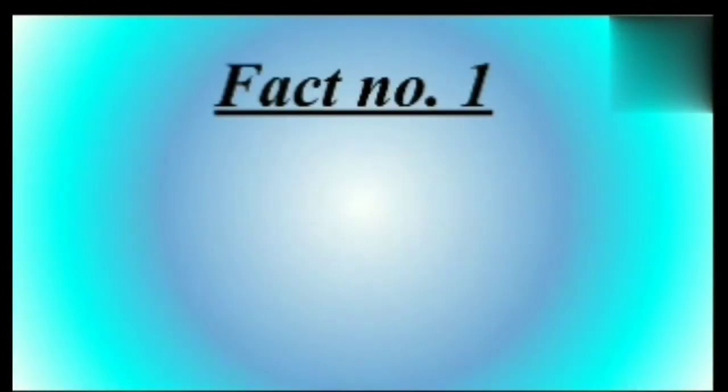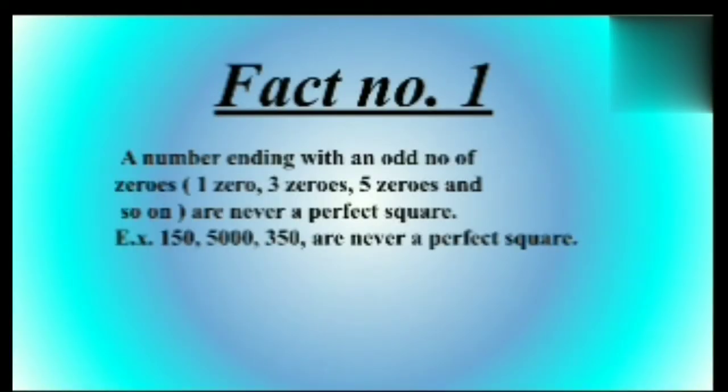Fact number one: A number ending with an odd number of zeros, like one zero, three zeros, five zeros, and so on, are never a perfect square. For example, 150, 5000, 350 are never a perfect square.